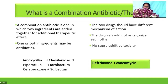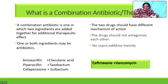These two drugs should have different mechanisms of action, they shouldn't antagonize each other, and there should be no supra-additive toxicity. An example of combination therapy is when you are giving ceftriaxone for pneumonia and you suspect MRSA — you add vancomycin. Ceftriaxone plus vancomycin is combination therapy.